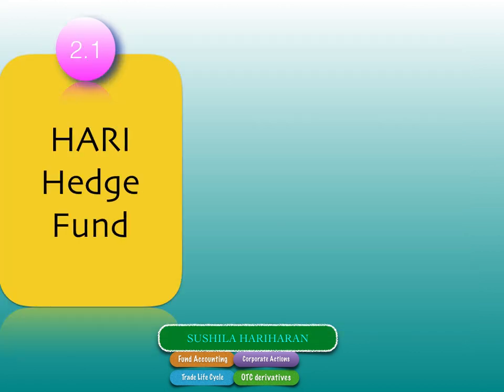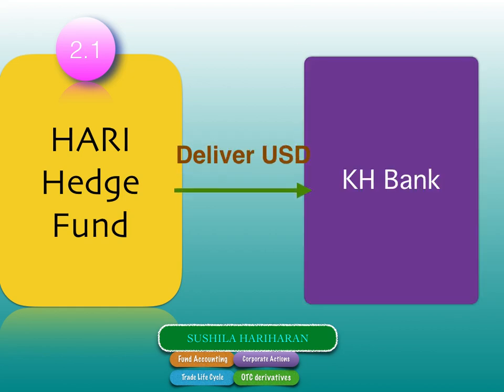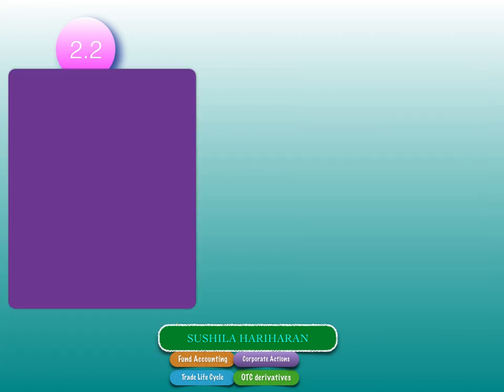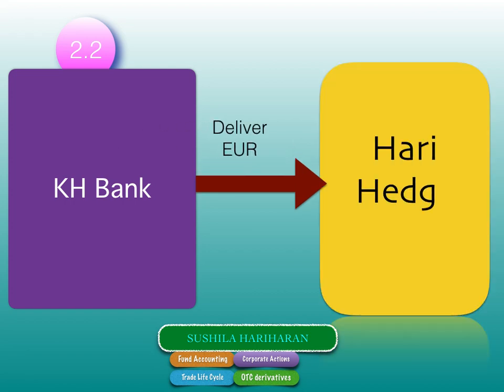Moving on: Hari Hedge Fund therefore has to deliver USD to counterparty KH Bank before the spot settlement date, or whatever settlement date is specified. Similarly, KH Bank's obligation is to deliver euros to Hari Hedge Fund. Since Hari Hedge Fund shorted dollars, they must give dollars; since KH Bank took a short position in euros, they must give euros. For more detail, refer to the second lesson on the FX trade lifecycle.